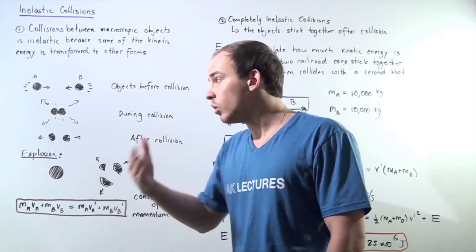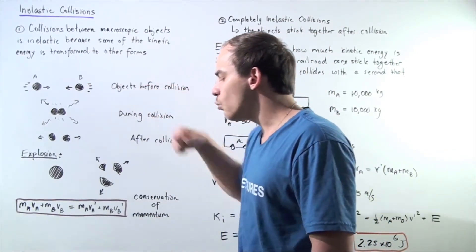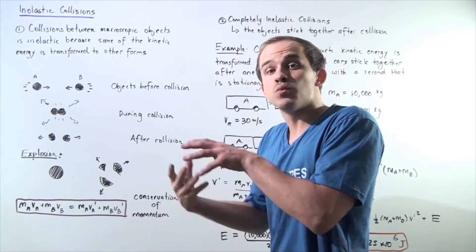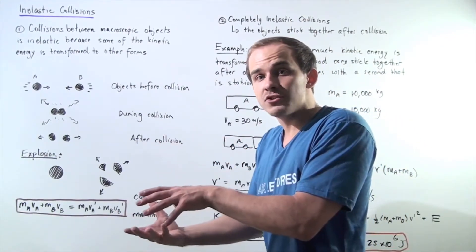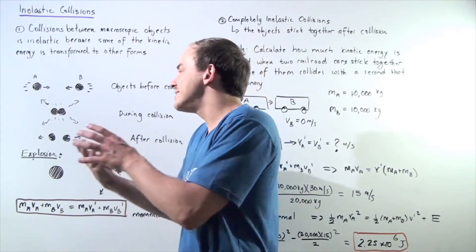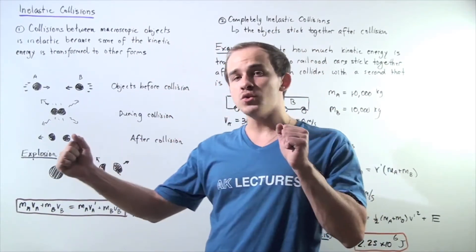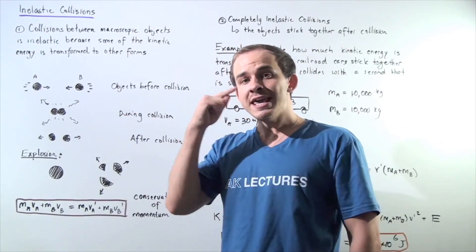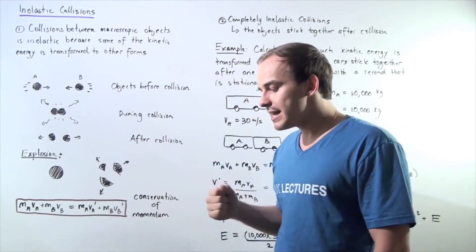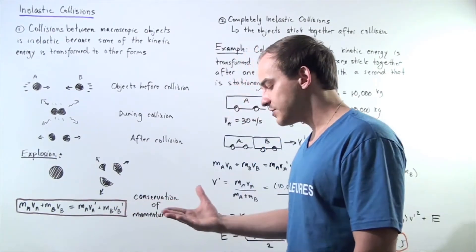One form of energy that will be produced is sound. Sound waves are energy — one form of energy. So macroscopic kinetic energy goes into creating sound waves. That's exactly why, when two objects collide, we hear that collision, because some of that kinetic energy is transformed into sound waves.